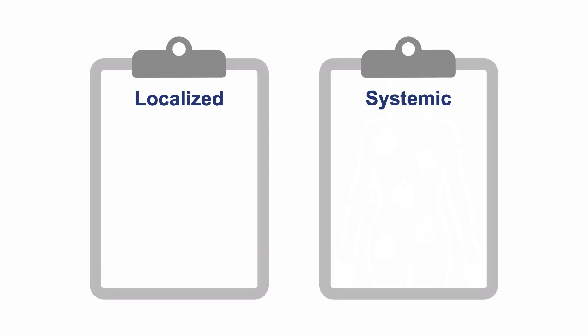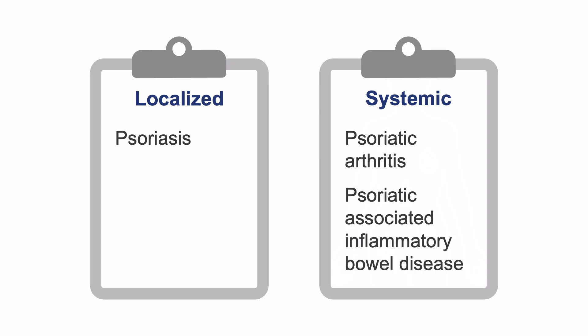Determining how localized inflammation is helps determine the severity of a skin or soft tissue disorder. For instance, is this localized psoriasis or is there likely to be psoriatic arthritis or psoriatic-associated inflammatory bowel disease?